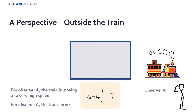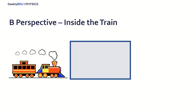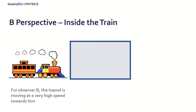Let's go now for observer B. Into B's perspective, everything according to his perspective is moving around him. So he is in the train — the train is not moving. But everything around him is moving at a very, very high speed, close to the speed of light. So for observer B, the tunnel is moving at a very high speed towards him. So again, we have that the length shrinks — the length contracts according to B.